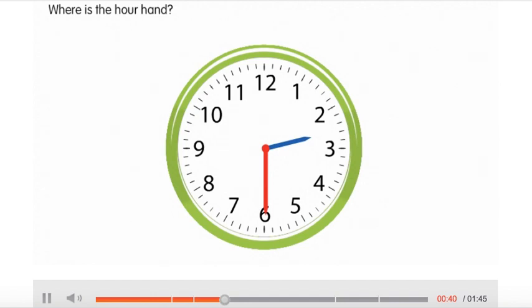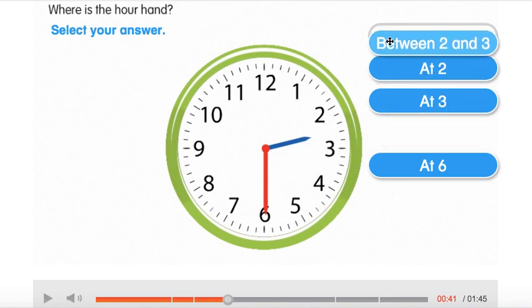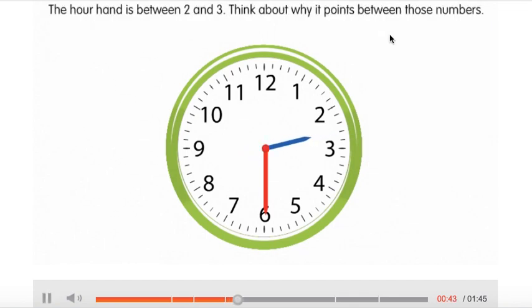Where is the hour hand? Select your answer. The hour hand is between 2 and 3. Think about why it points between those numbers.